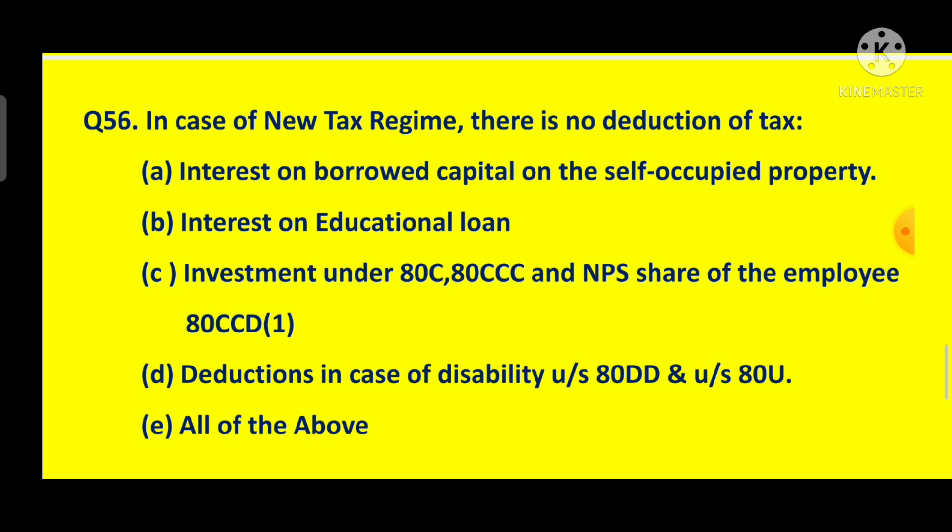Question No. 55: In case of new tax regime, except Section 80CCD2, there is no tax deduction in any other section of Chapter 6A. Question No. 56: In new tax regime, there is no deduction for: interest on borrowed capital on self-occupied property; interest on educational loan; investment under 80C, 80CCC, and NPS employee share 80CCD1; deductions in case of disability under 80DD and 80U — all of the above, answer D. Question No. 57: In new tax regime, there is no exemption for leave travel allowance, house rent allowance, or children's educational allowance — all exemptions under Section 10 — answer all of the above.